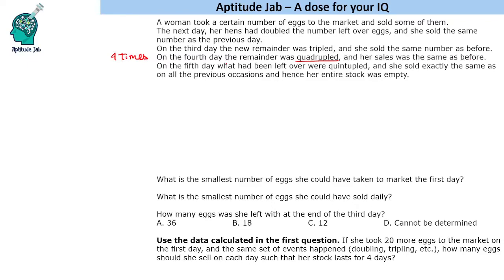On the fifth day, what had been left over were quintupled. Quintupled means became five times, and still her sale was the same as all previous occasions. Hence, her entire stock was empty on the fifth day.